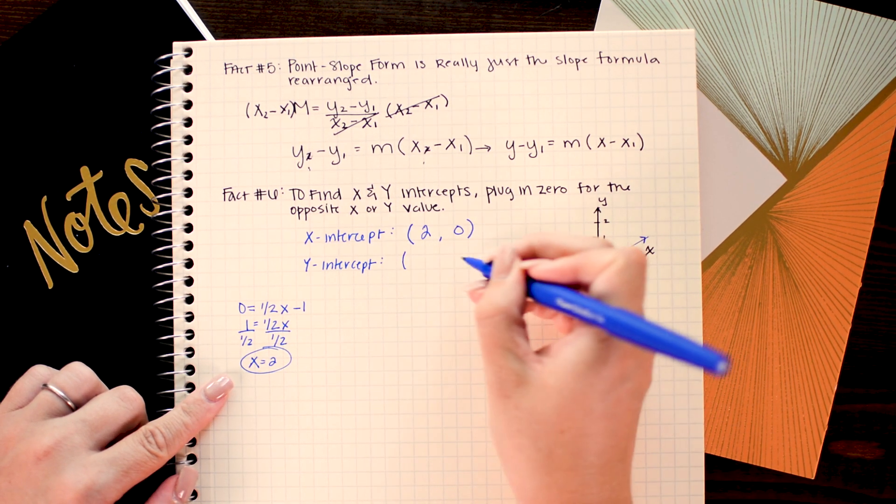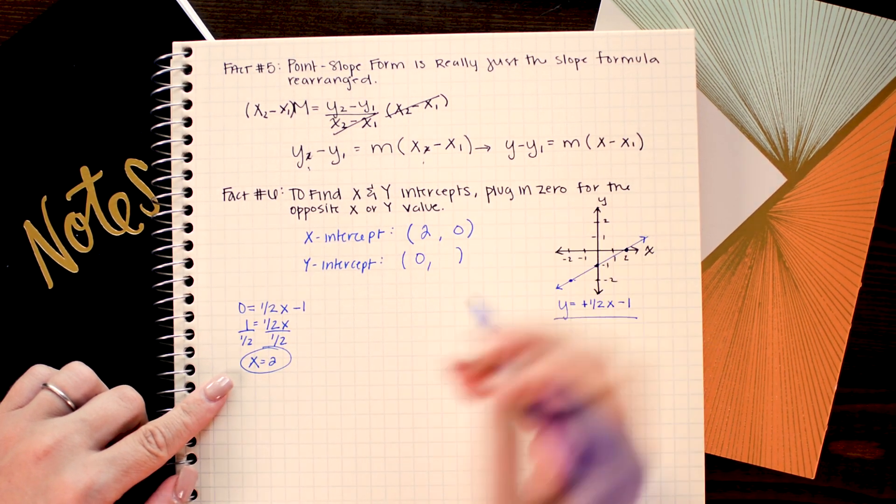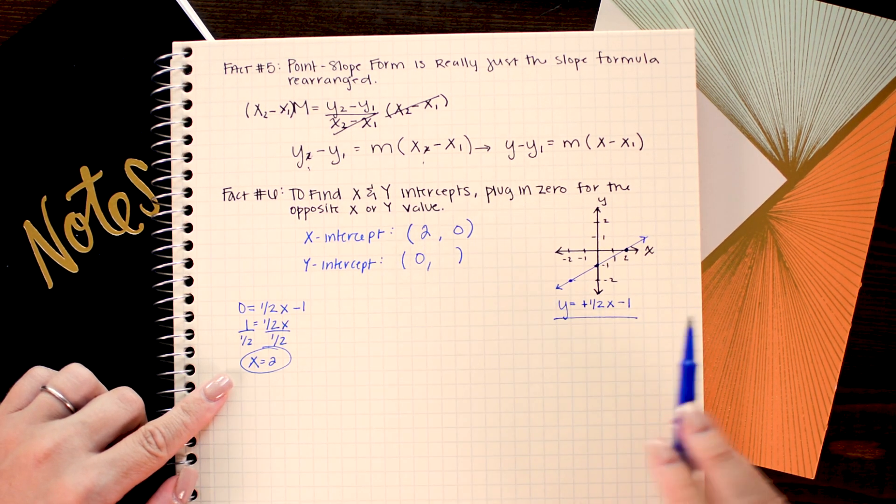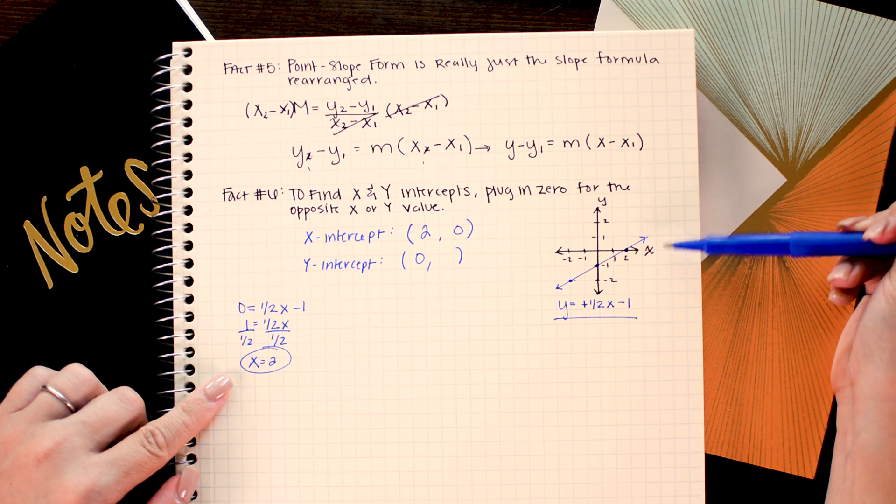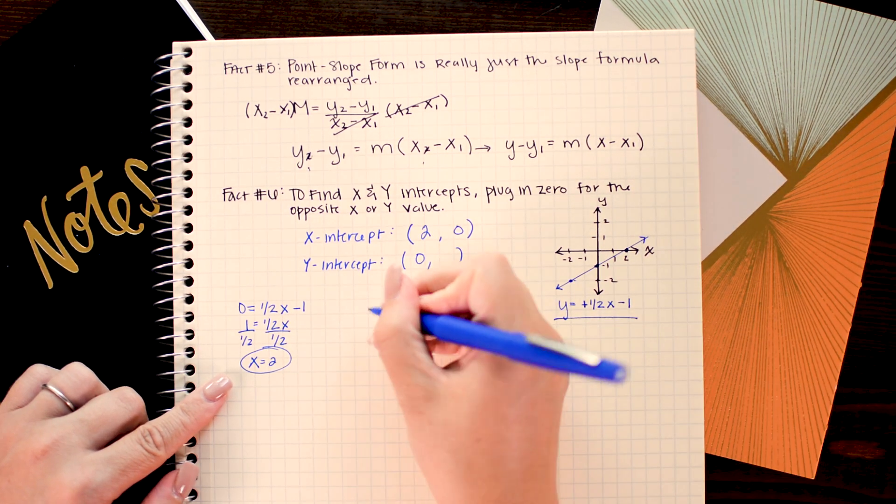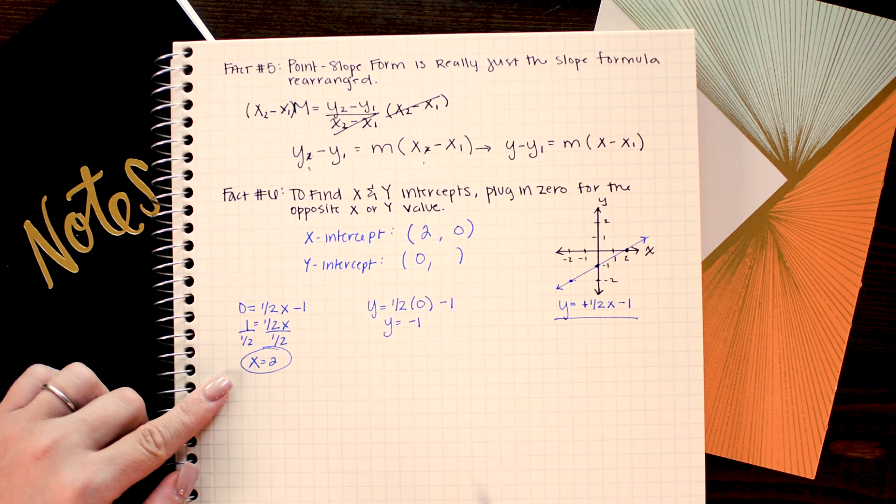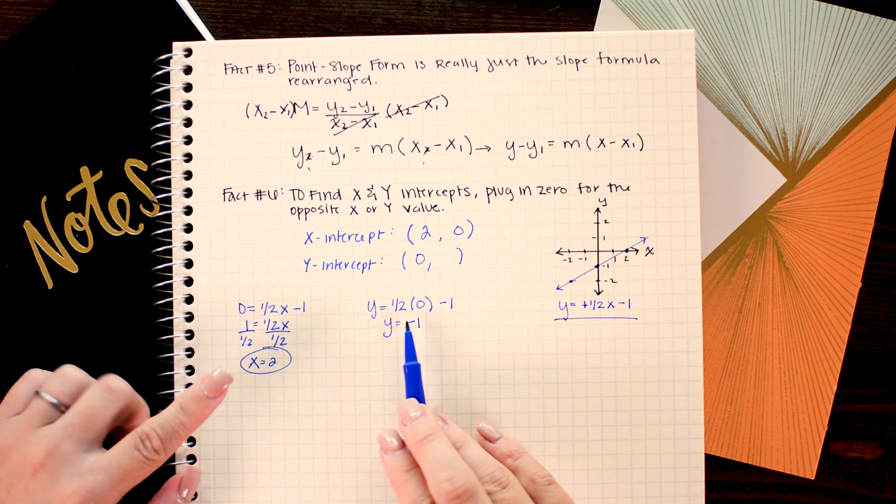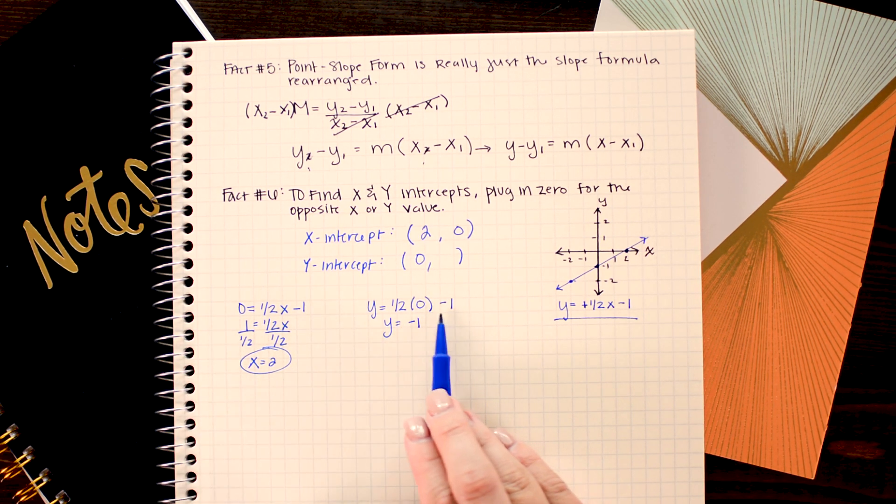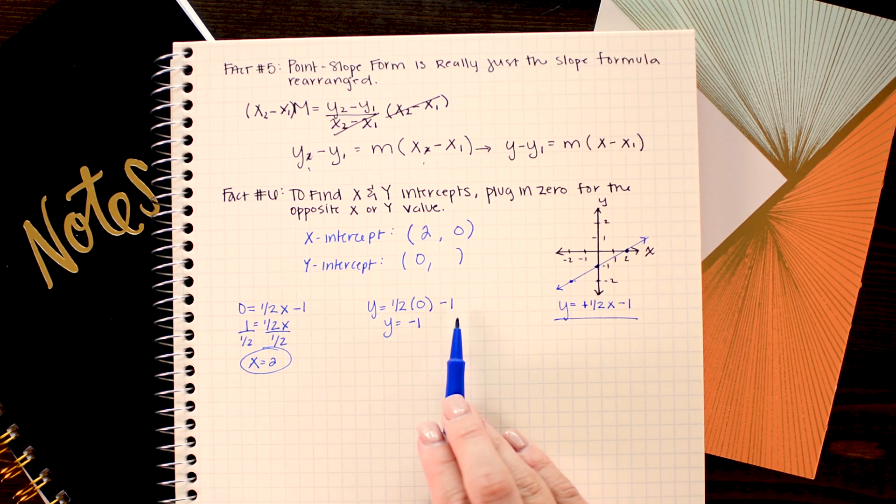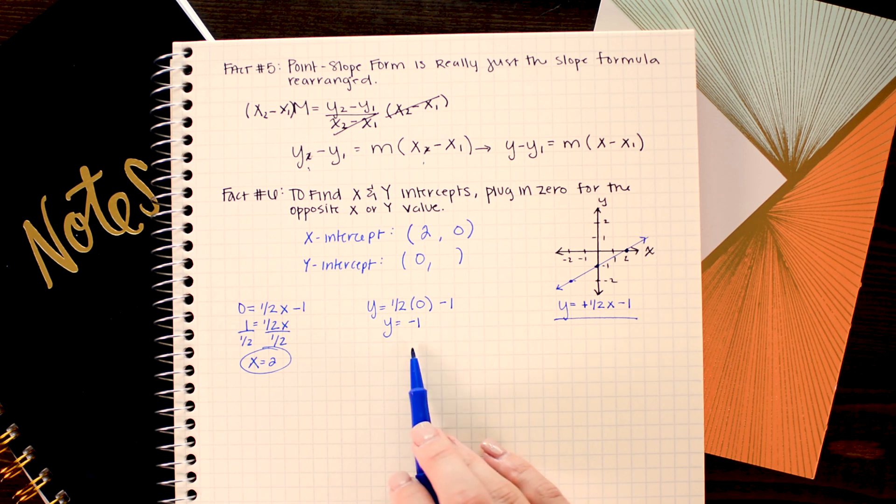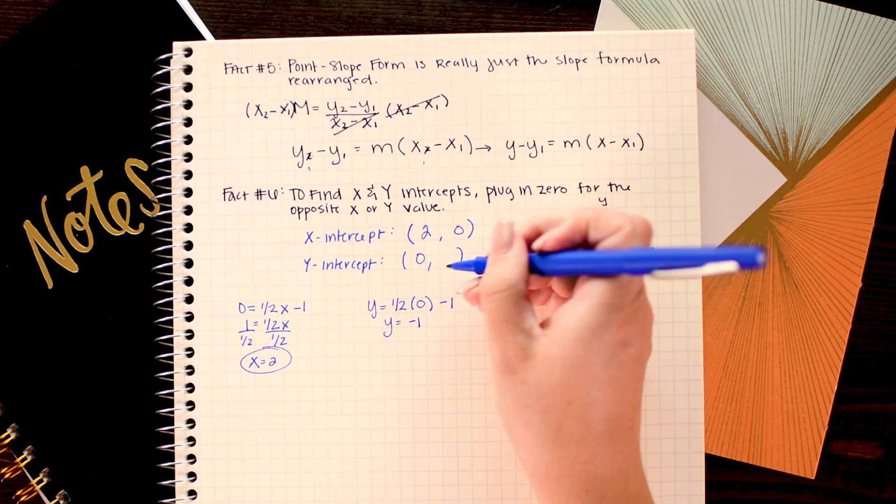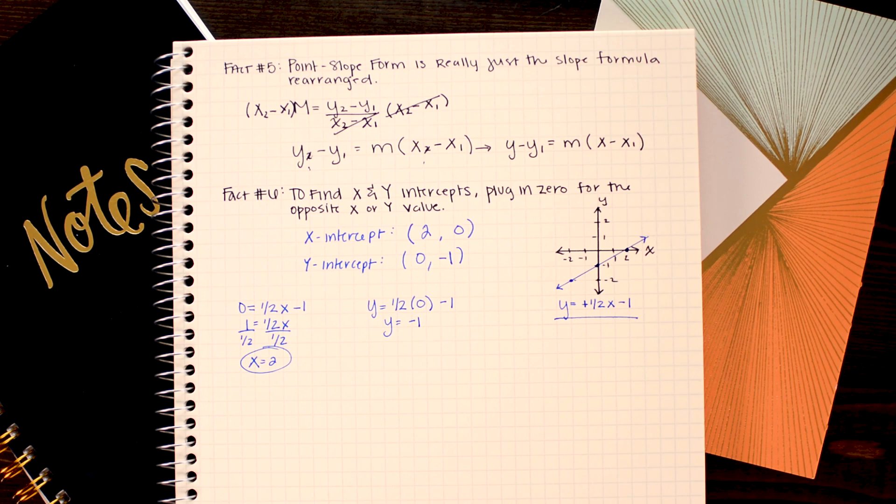Likewise to find the y intercept I'm just going to plug in zero for x because the y axis always crosses the x axis at zero. And because whenever I plug in zero for x I'm just left with the constant that's added or subtracted from the end that is y, in y equals mx plus b form b is the y intercept. So all I have to do here is write the negative one in for y.